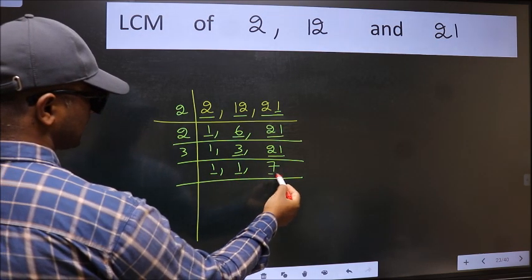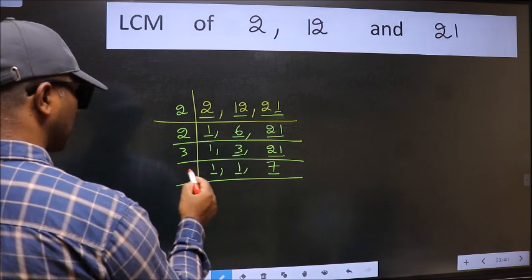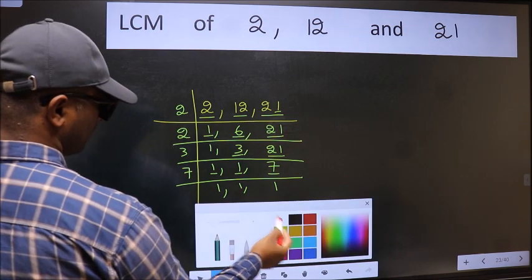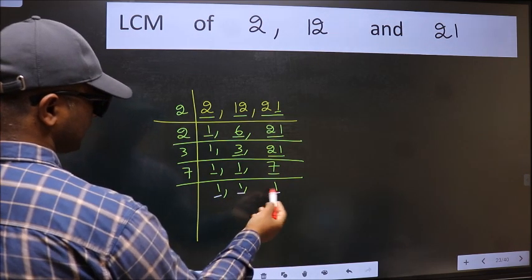So focus on the next number 7. 7 is a prime number. So 7, 1, 7. So we got 1 in all the 3 places.